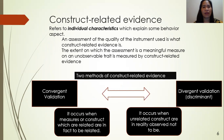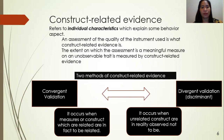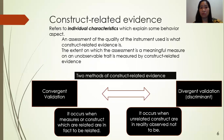Construct-related evidence begins with the term construct. In establishing construct validity, two methods may be used: convergent validation and divergent validation. Convergent validation occurs when measures or constructs which are related are in fact found to be related. Discriminant validation occurs when unrelated constructs are in reality observed not to be related.